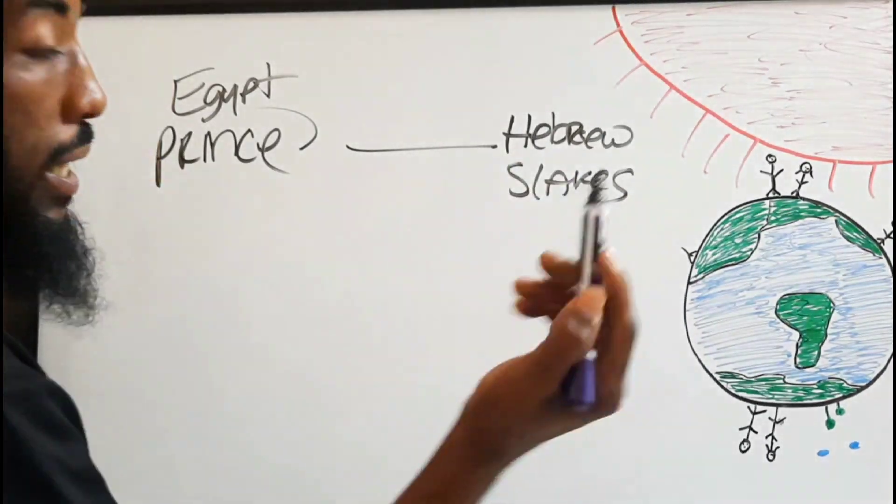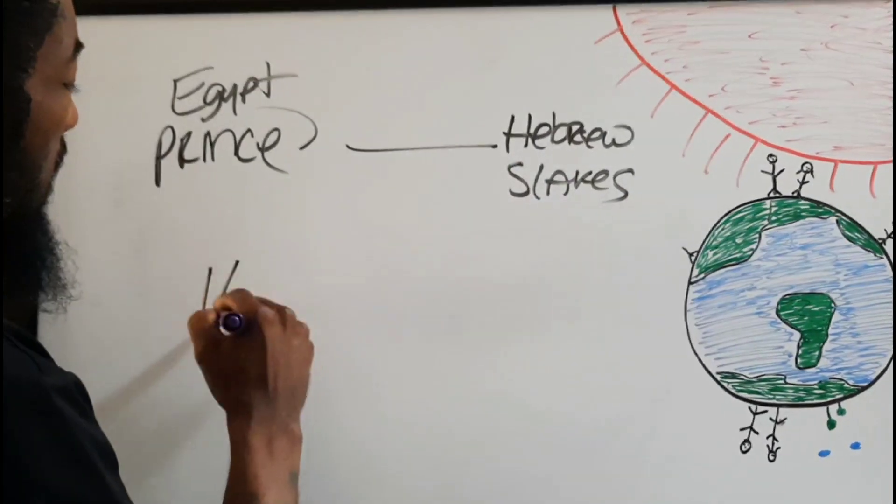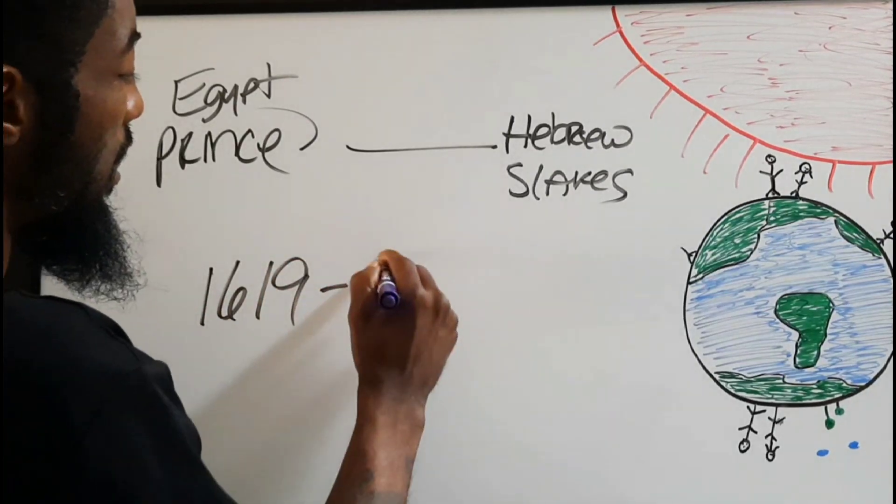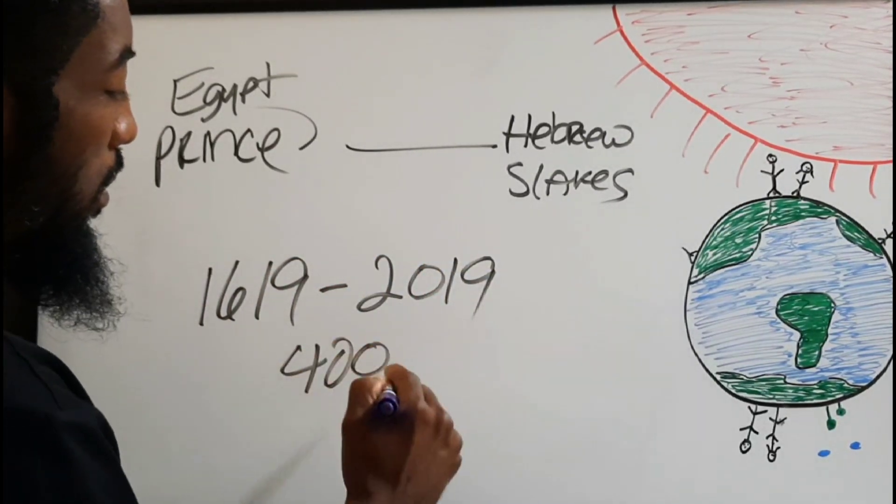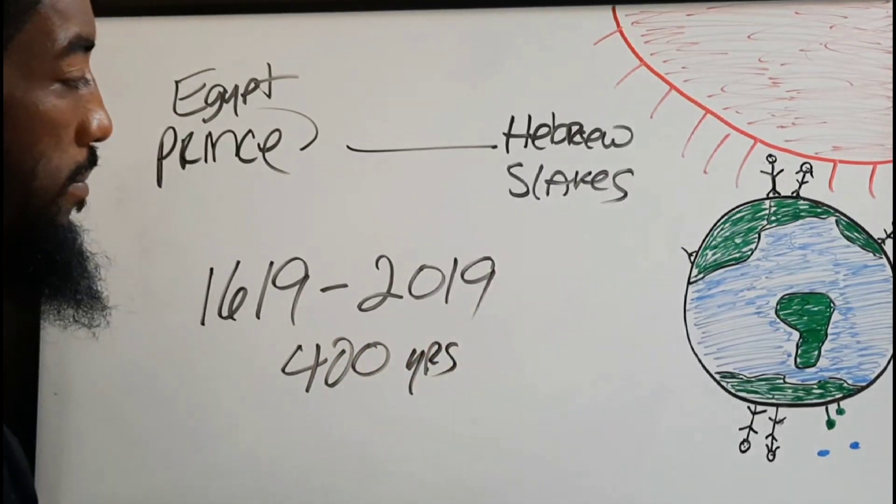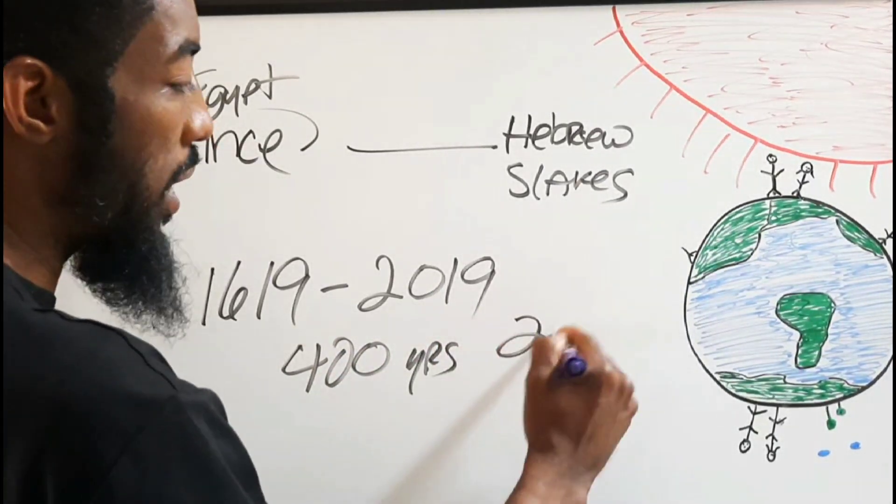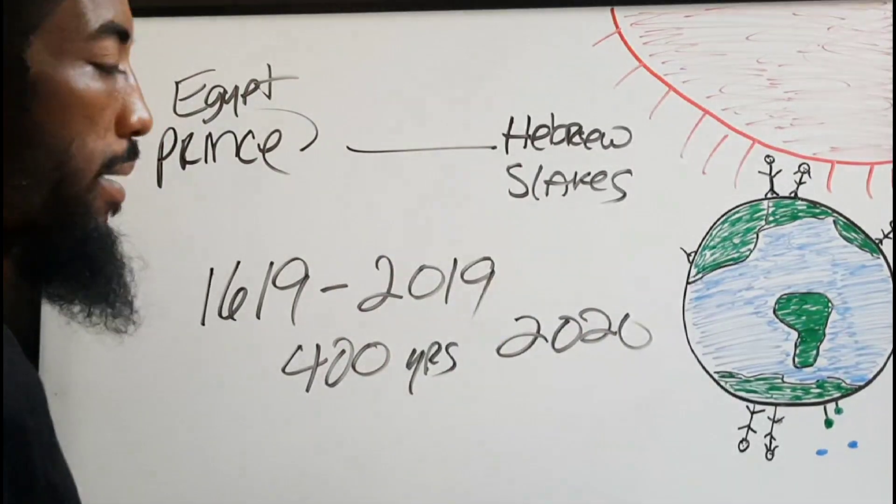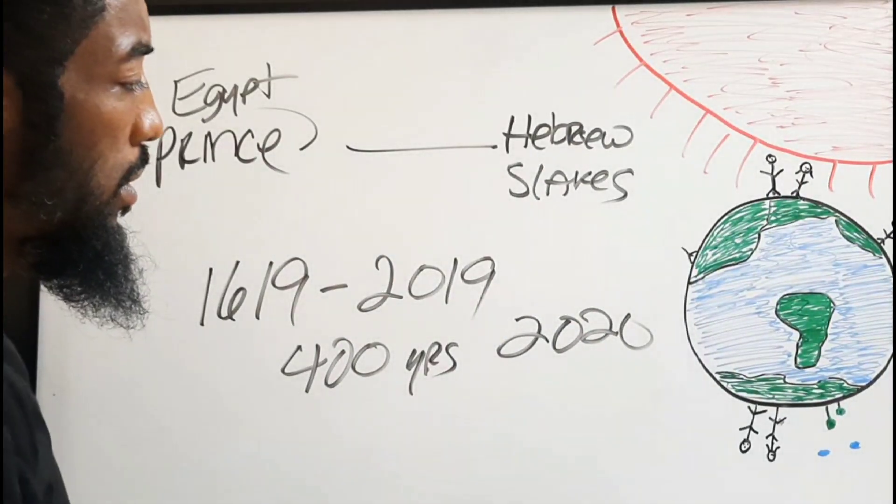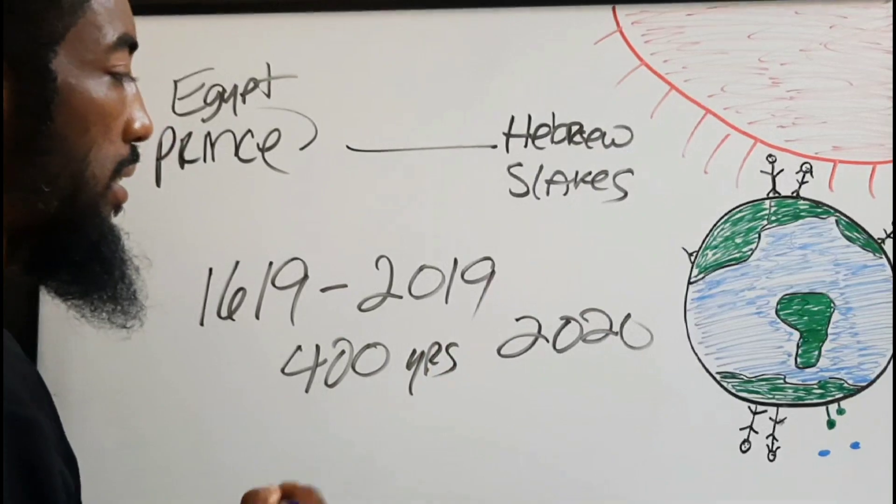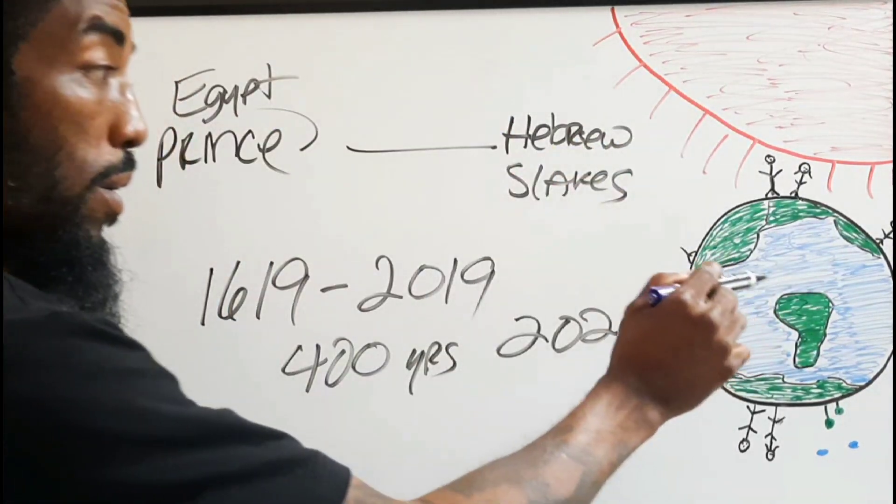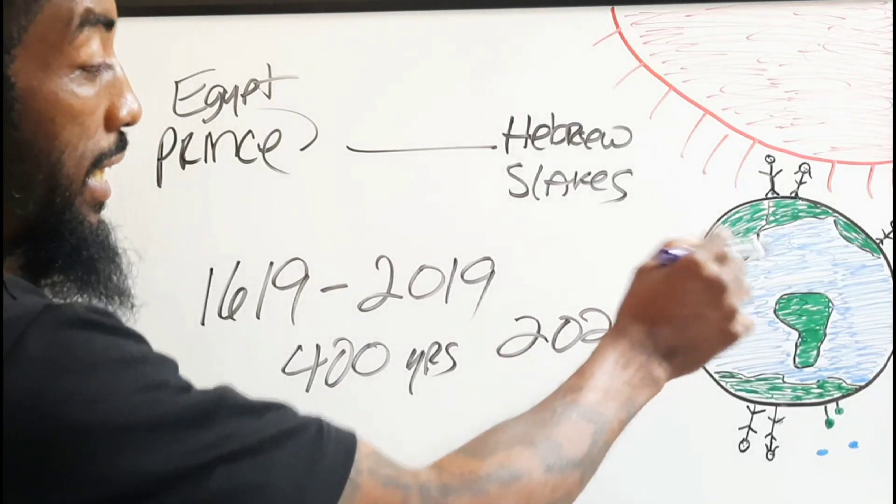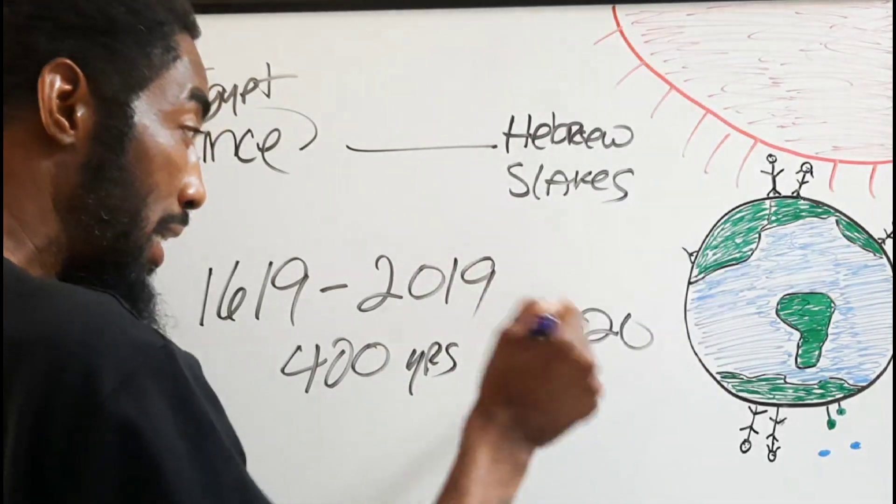What I'm saying people, we've been here 400 years from 1619 to 2019, that's 400 years people. We're in 2020, 2020 man the world shut down. A freeing happened. If you didn't get free man you in another world. That's what I'm trying to get you to see, a freeing happened in 2020.